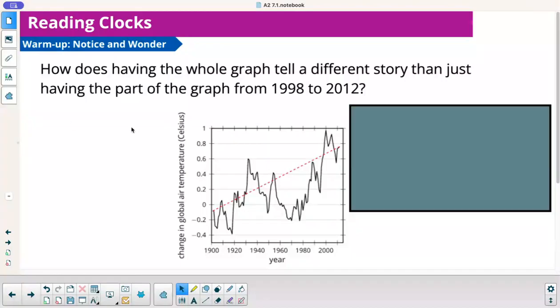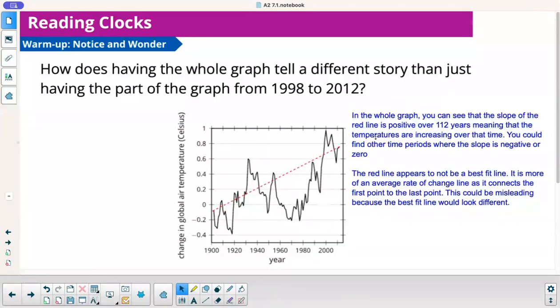All right. So another notice and wonder here. How does having the whole graph tell a different story than just having the part from 98 to 2012? I think it was 2000 to 2012. I don't know why that says 98, but here's the whole graph. So, again, same idea. This is the red, looks like, appears to be an average rate of change, starts at the starting point, ends at the ending point. So what are some things we notice here? I just put some observations. So let's see here. In the whole graph, you can see that the slope of the red line is positive over that 112 year period, meaning that the temperature is increasing over that time.